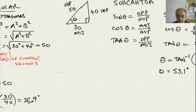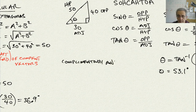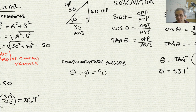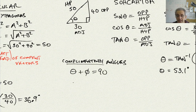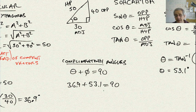In this case, theta equals the inverse tangent of 30 over 40, which gives us 36.9 degrees. This makes total sense because 36.9 is the complement of 53.1. Complementary angles add up to 90 degrees, and indeed 36.9 plus 53.1 equals 90.